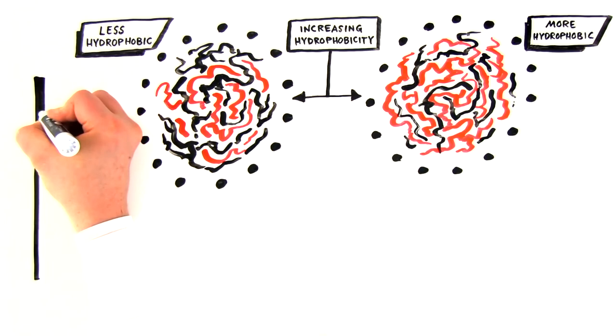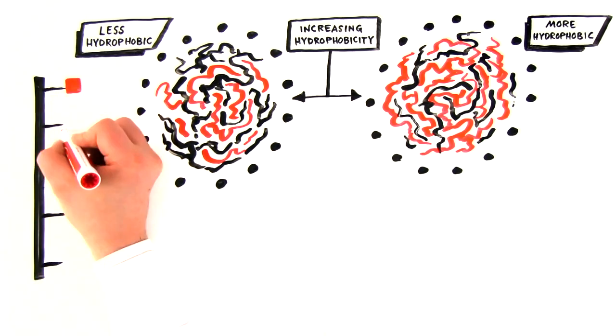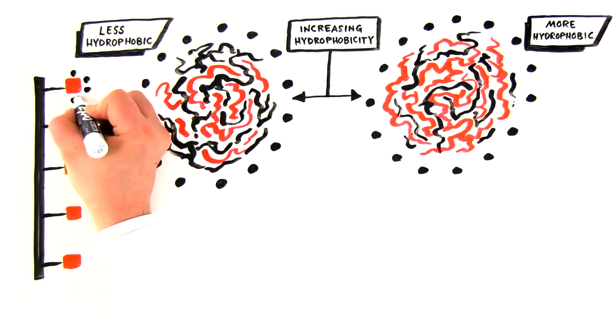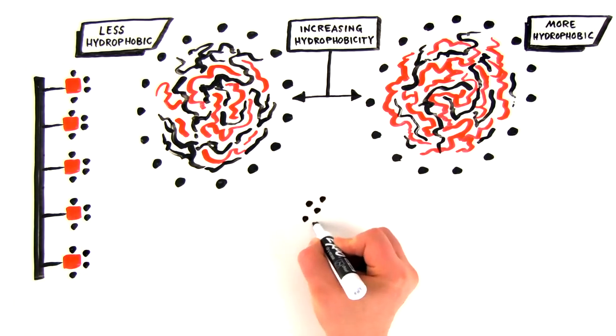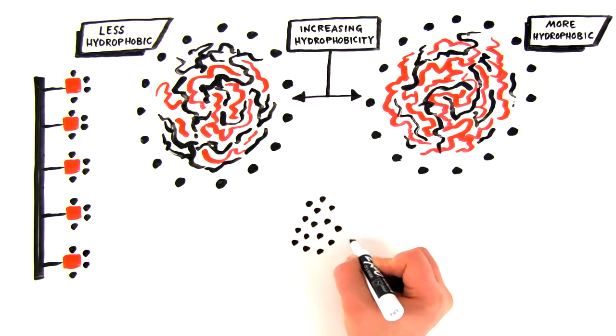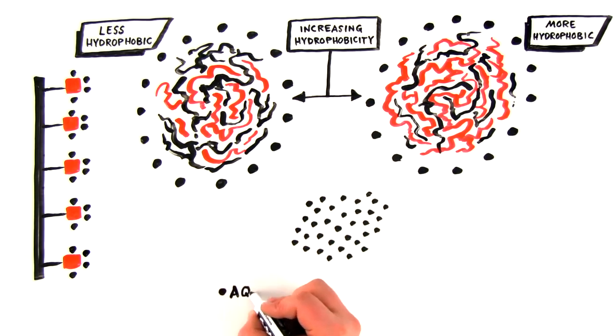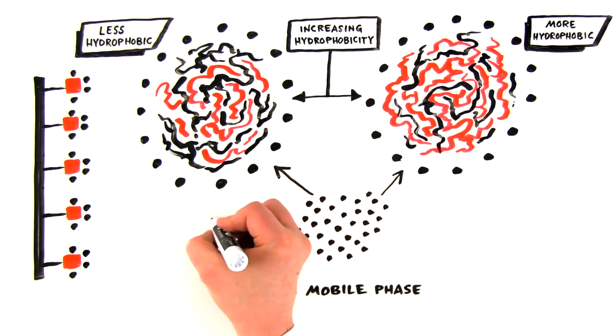When proteins are situated in an aqueous environment, in the absence of salt, a dense layer of water molecules is formed around the protein shielding the hydrophobic patches. At the same time, a dense layer of water is formed at the surface of the stationary phases, also shielding the hydrophobic ligands. These layers of water molecules prevent the protein from interacting with the stationary phase.